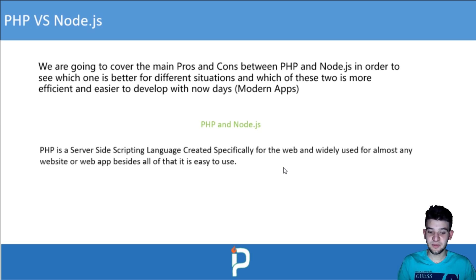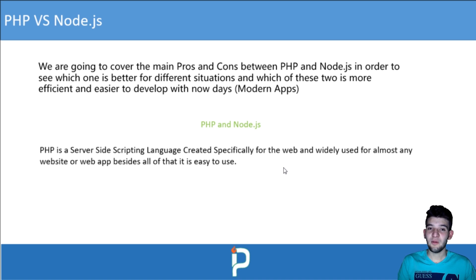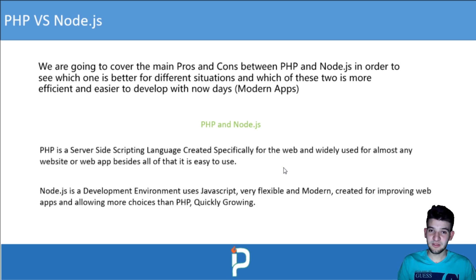PHP is a server-side scripting language created specifically for the web and widely used for almost any website. It's very simple to get started with, and one of its key strengths is the ability to embed PHP scripts directly into HTML files. Node.js is a development environment — JavaScript, the language used within it, is very flexible, supports modern applications, and was created for improving web apps.